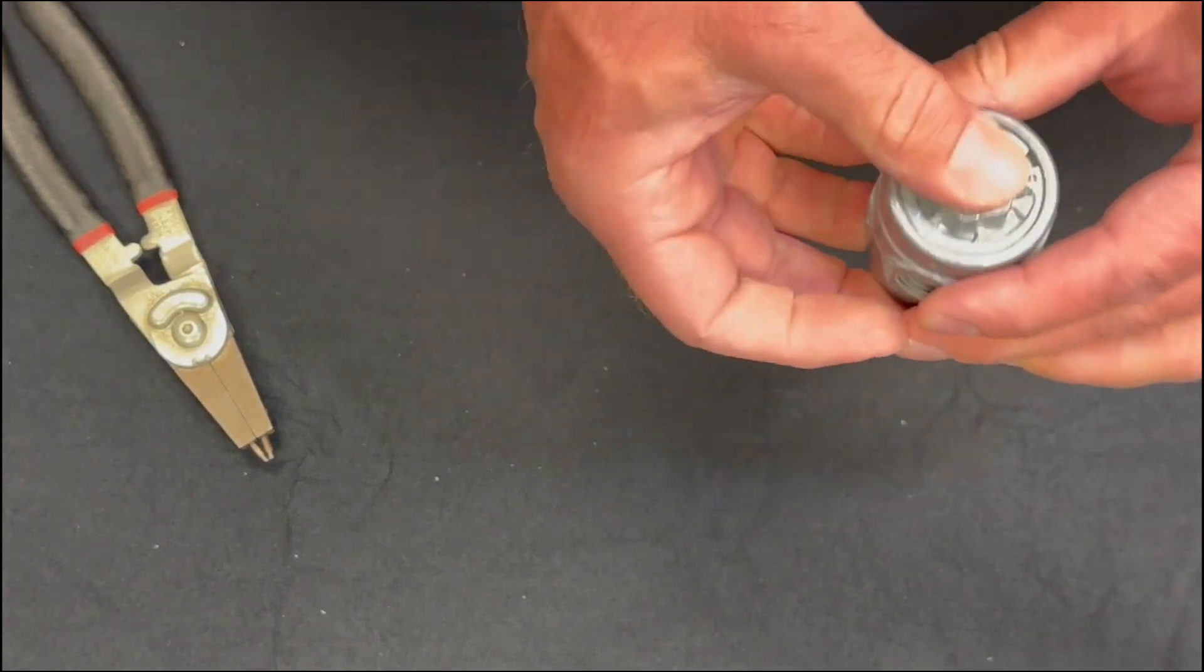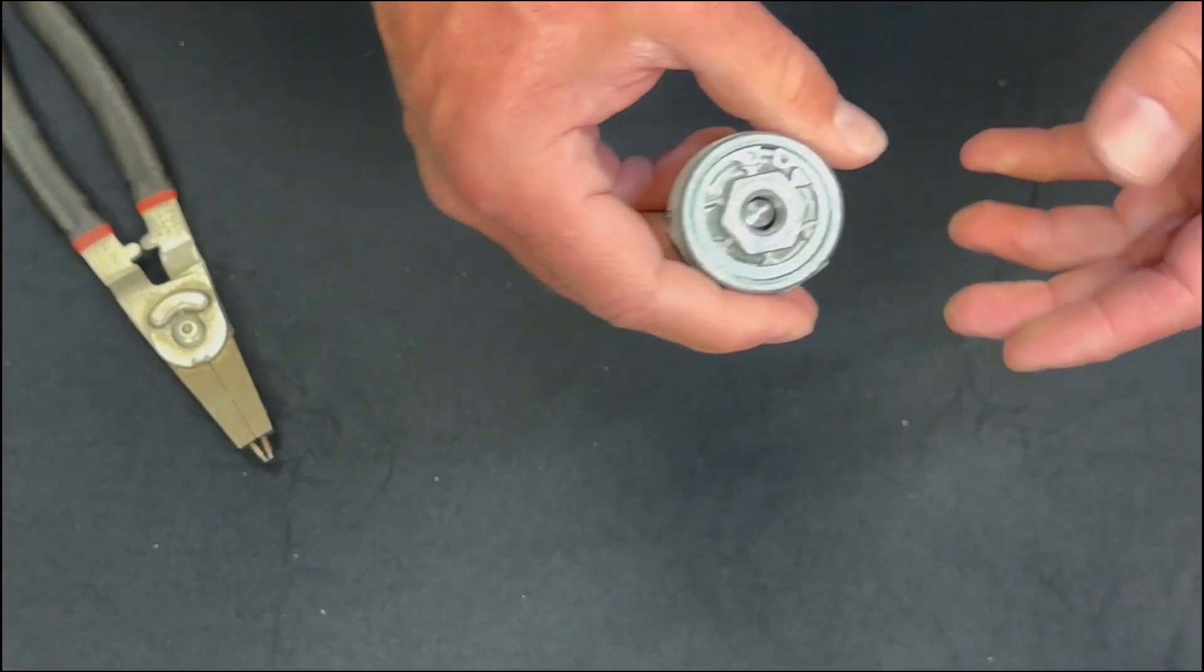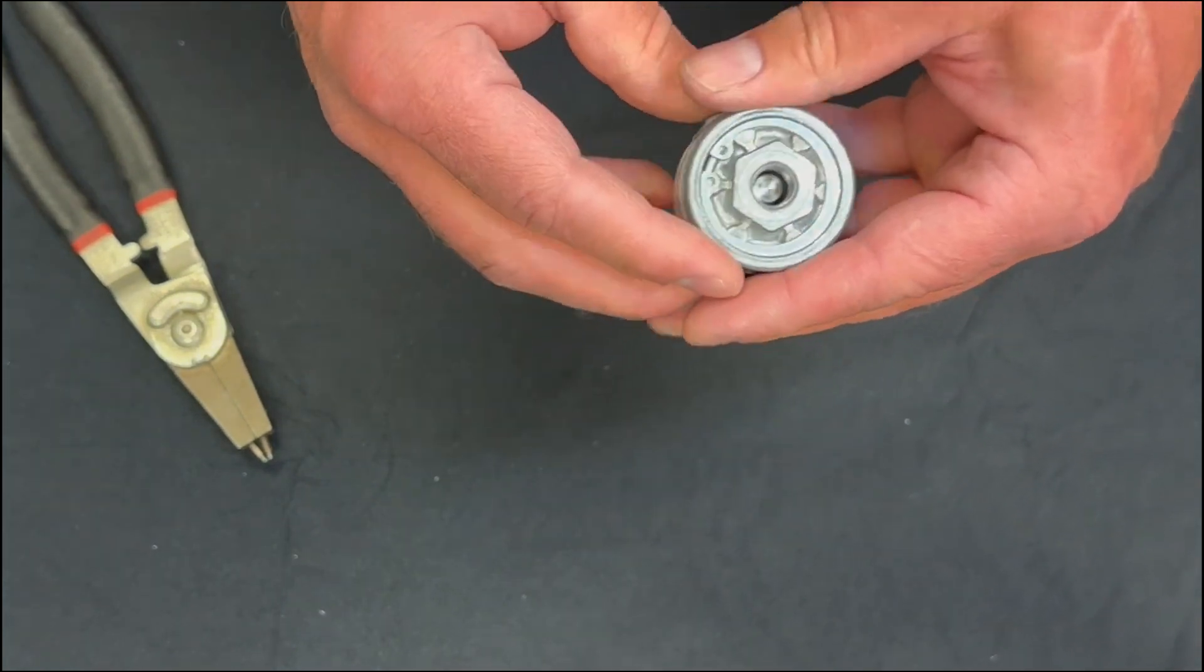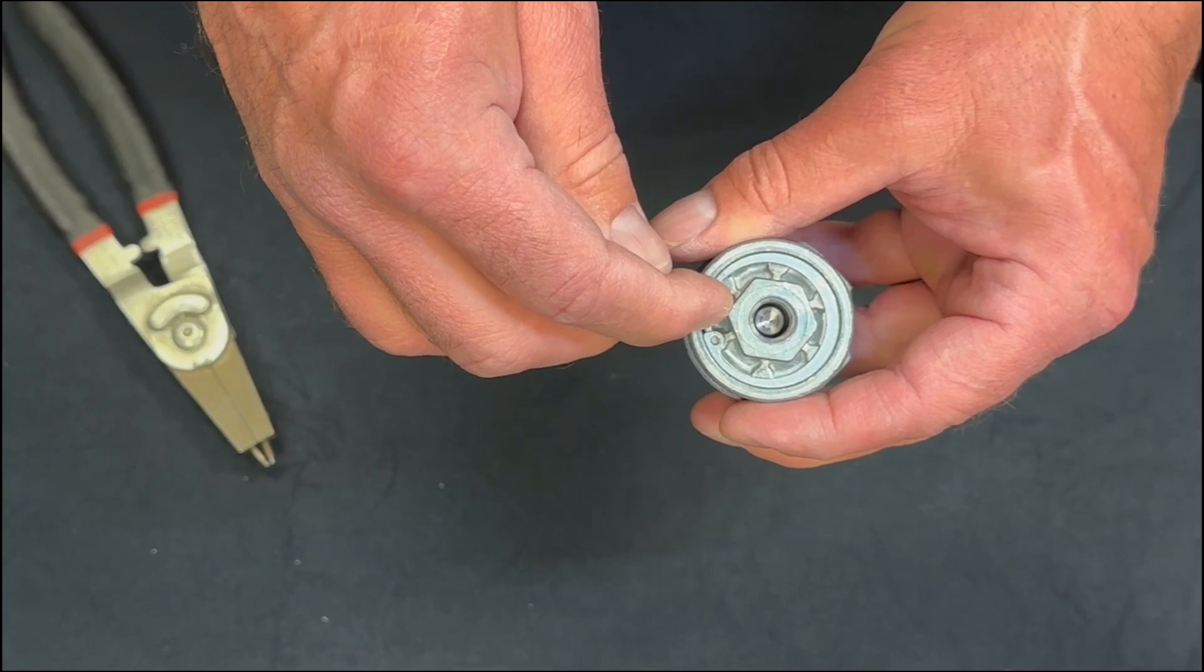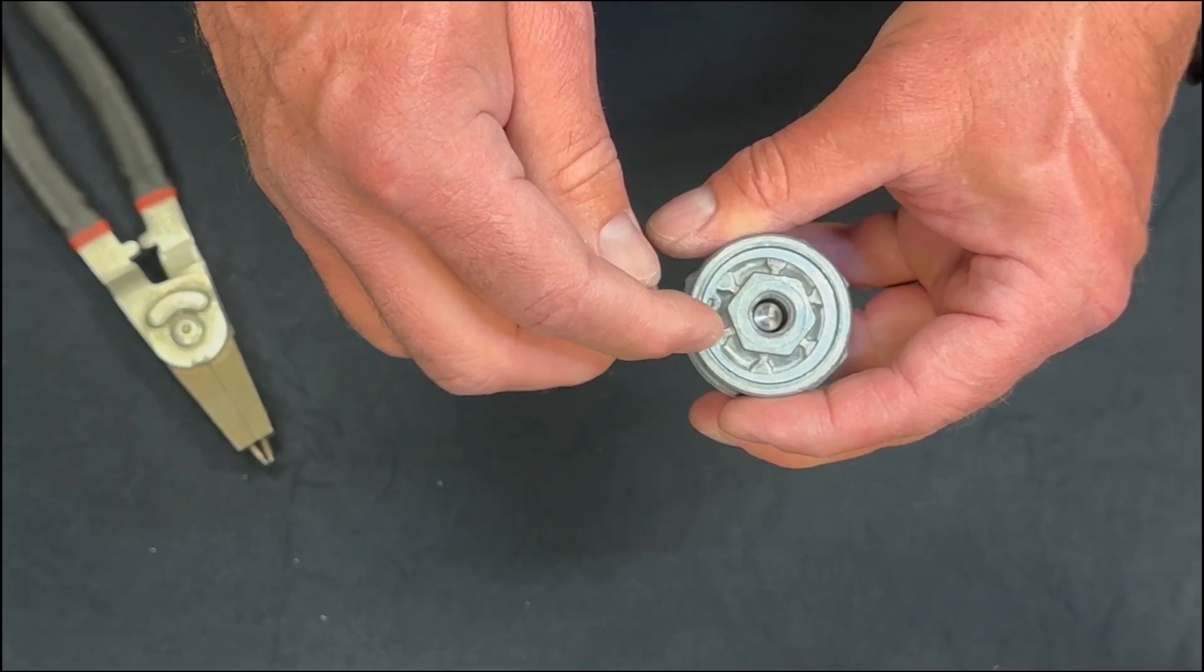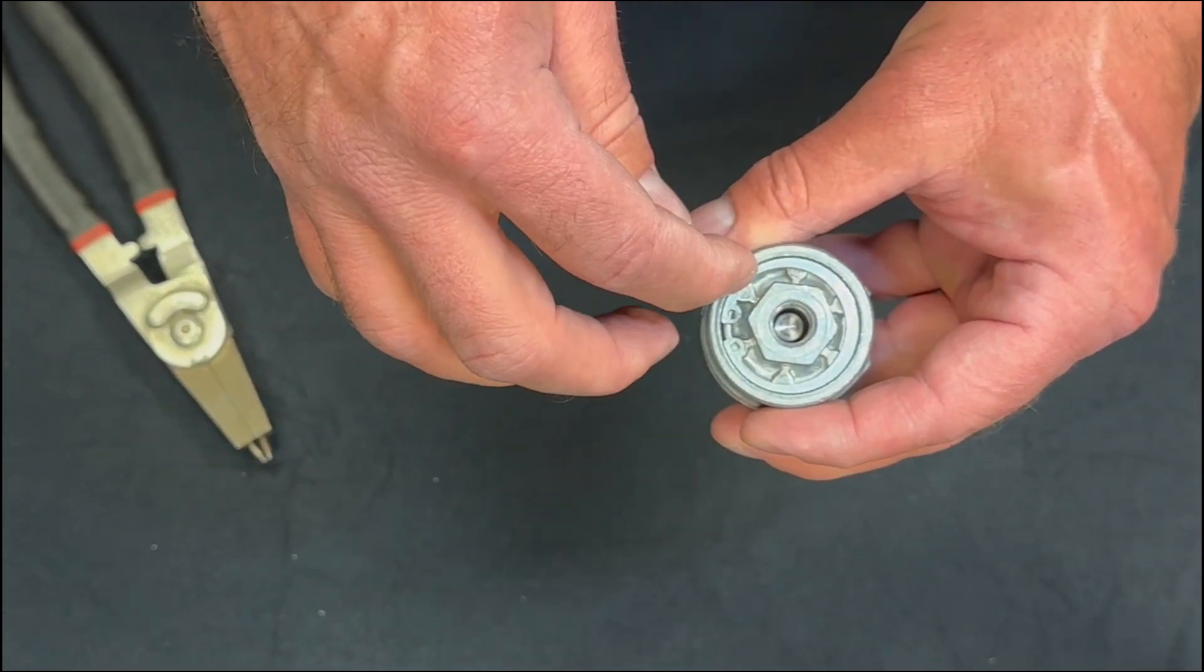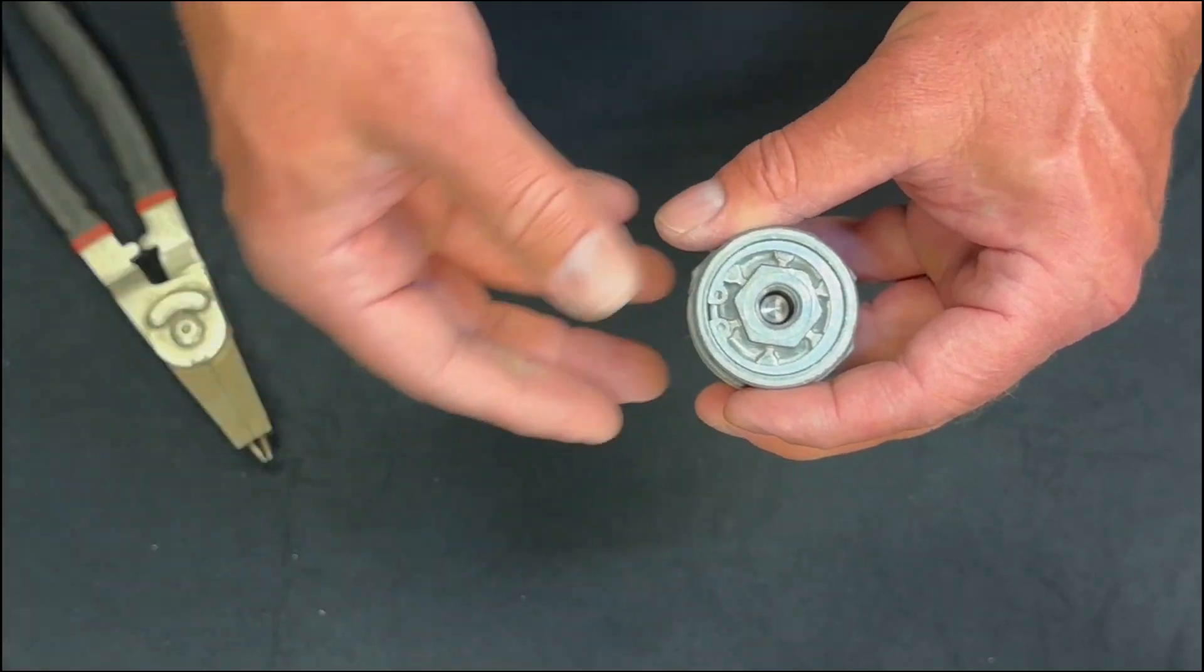Once everything is back in place, go ahead and reinstall the pilot valve back onto the tank, making sure that you hold a backup on the top cap of the pilot valve in order not to distort or destroy the diaphragm inside of the pilot valve and retest your system.